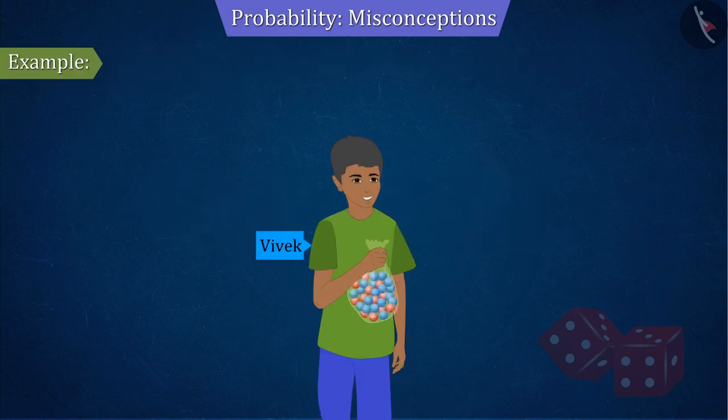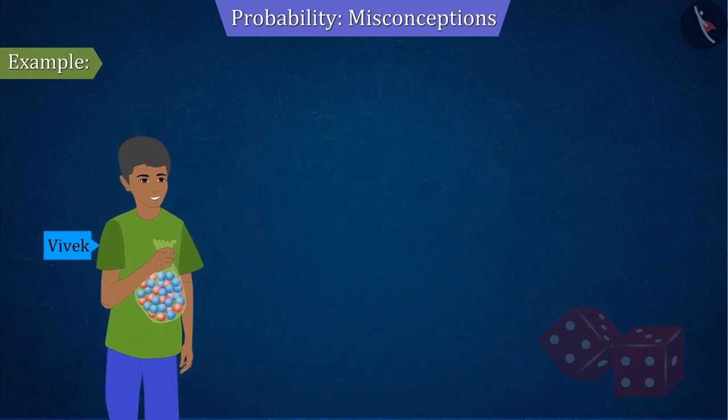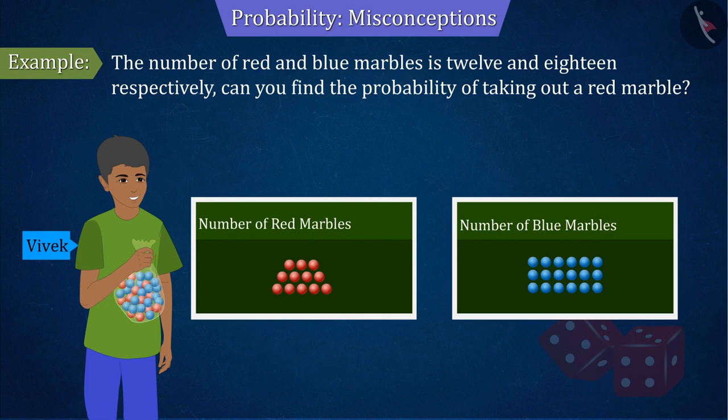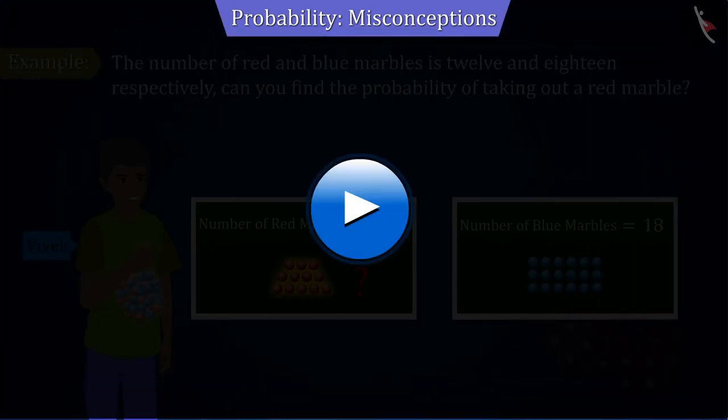Vivek has a bag containing only red and blue marbles. If the number of red and blue marbles is 12 and 18 respectively, can you find the probability of taking out a red marble? Pause the video to solve the question and then match your answer.